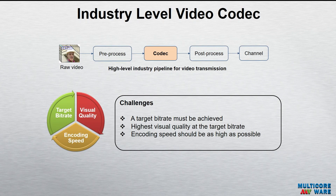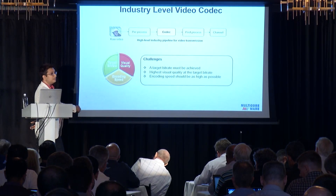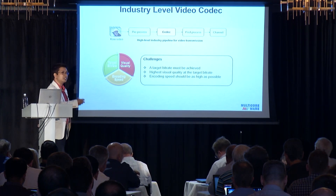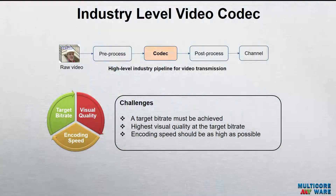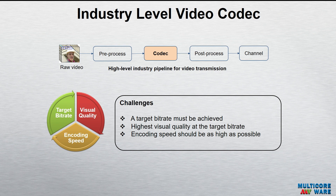At a very high level, any video pipeline can be defined in terms of these blocks. You have a raw video file and you need to do some pre-processing if required — that means scaling, filtering, or other steps. After that, you need to encode the video, meaning you compress it. Then you might go for post-processing, and finally the whole video data goes towards the channel. We are mainly focused on the video encoder part here.